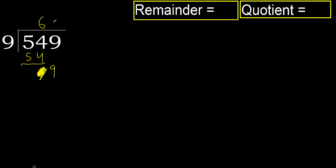9 — multiply by 2: 18, it's greater. Multiply by 1: 9, it's not greater. Okay. Subtract. 9 minus 9 equals 0.